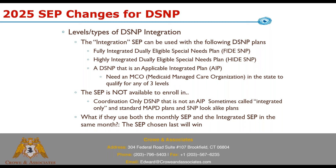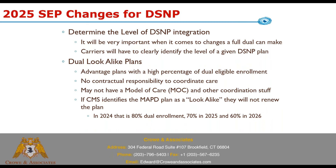To determine the level of D-SNP integration, it's going to be very important to know the level of the plan to see if you can move a full dual into it. Carriers are going to have to clearly identify the level of a given D-SNP plan. There are some states that have no D-SNP plans meeting that level of integration — Connecticut is one of them. Full duals in Connecticut most likely will not be able to move during the year because there won't be anything that qualifies to move them into.